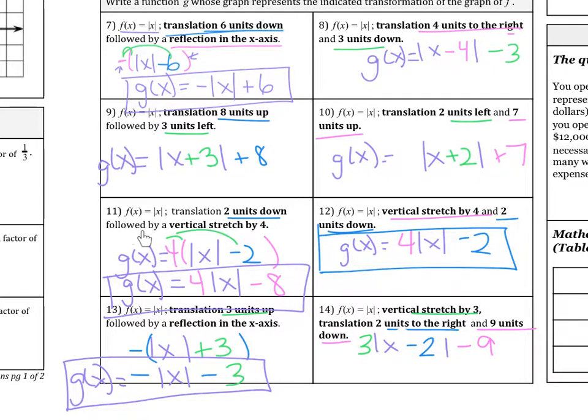This one is 2 units down, so I had to do minus 2. Then followed by a vertical stretch by 4. So notice I did 4, and then I actually have to distribute. So it's g(x) = 4|x| - 8. You have to distribute.